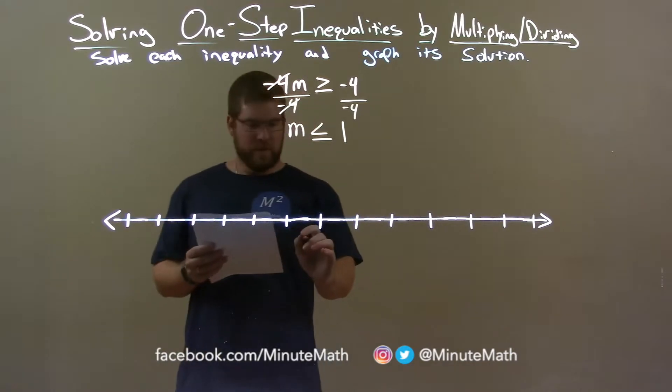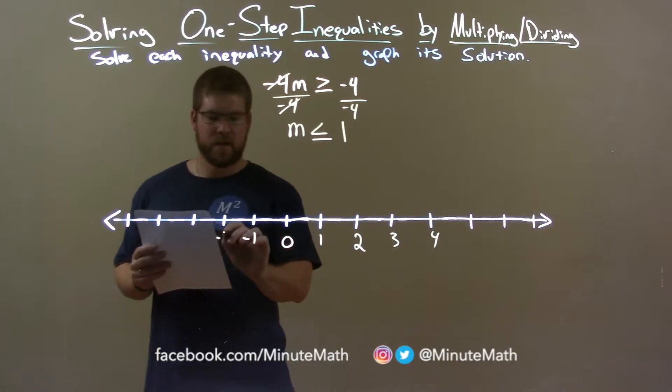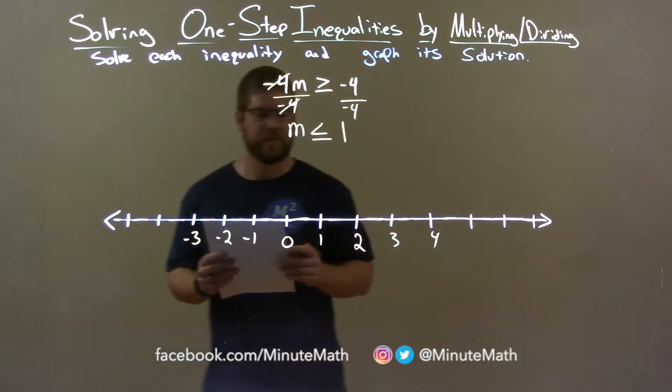We've got to graph that. Let's put 0 here. 1, 2, 3, 4, and negative 1, negative 2, negative 3.